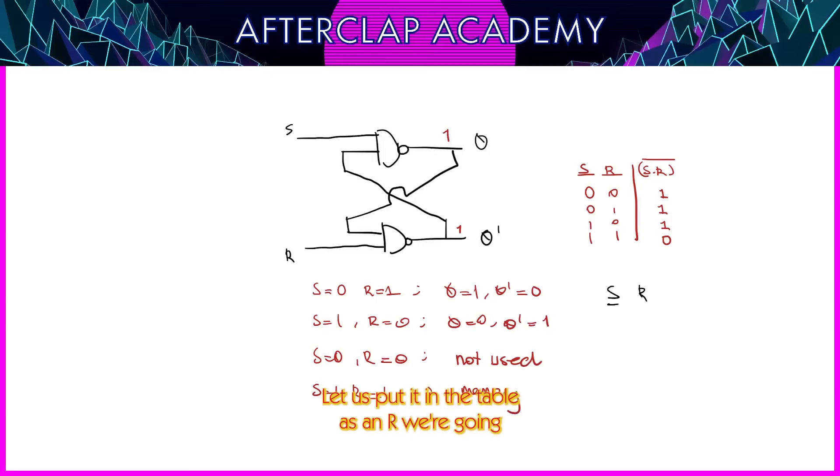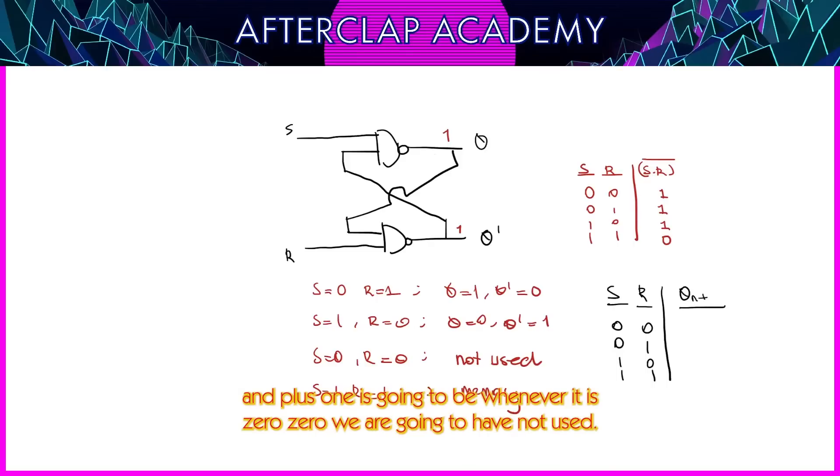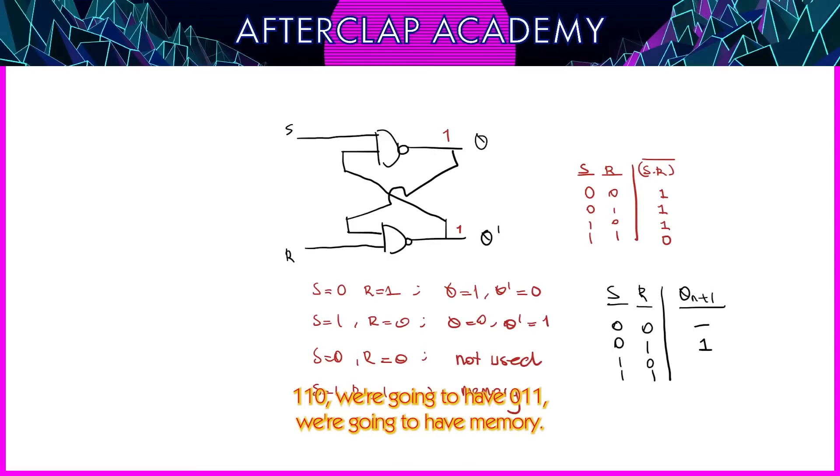Let us put it in the table. S and R, we're going to have 0, 0, 1, 1, 0, 1, 0, 1. The output, which is Q n plus 1, is going to be whenever it is 0, 0, we're going to have not used. So I'll just have a stick in here. 0, 1, we're going to have 1. 1, 0, we're going to have 0. 1, 1, we're going to have memory. So I'll just put Q n. This is the truth table of an SR latch.